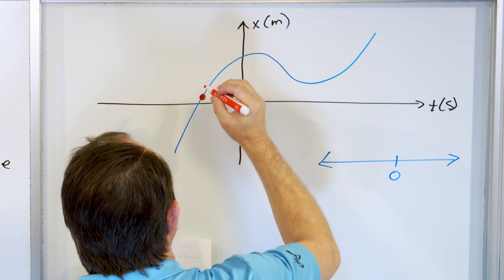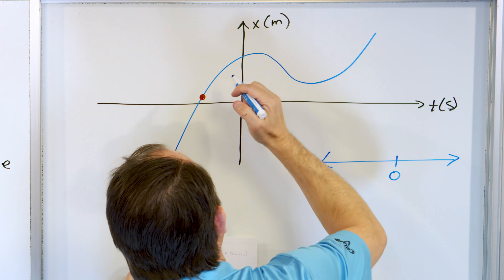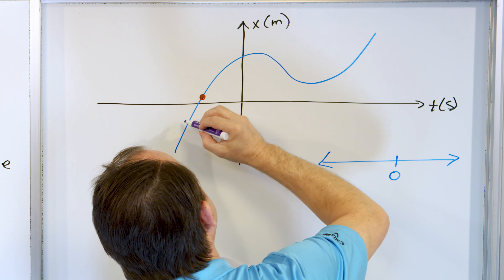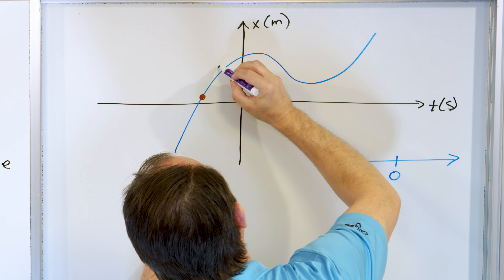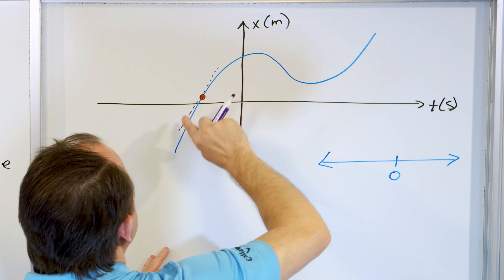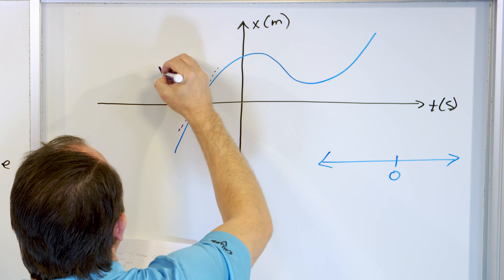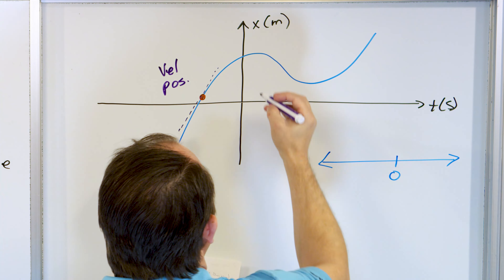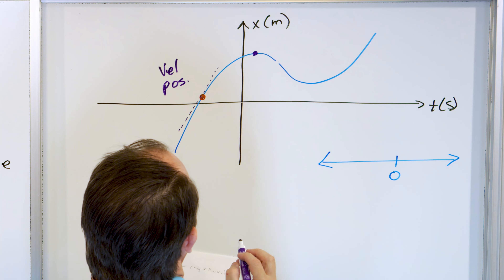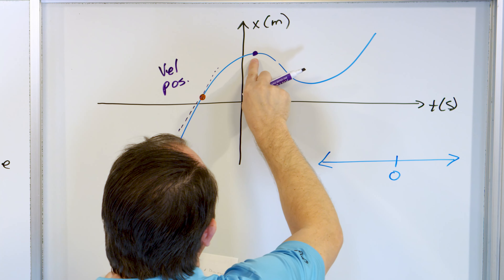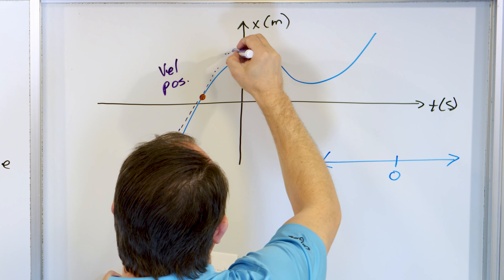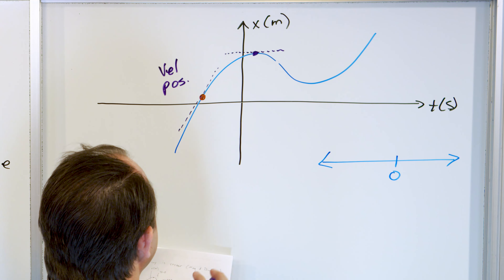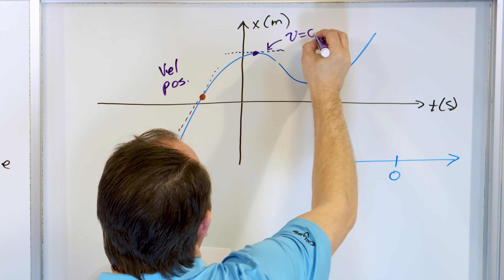We can tell what the velocity is at any point. What is the velocity at point number one? The tangent line here has a very high, positive slope. So the velocity is positive right there. What about at the very tippy top where it turns around? The tangent line is totally flat. The slope of a flat line is zero, so right there the velocity is exactly equal to zero.